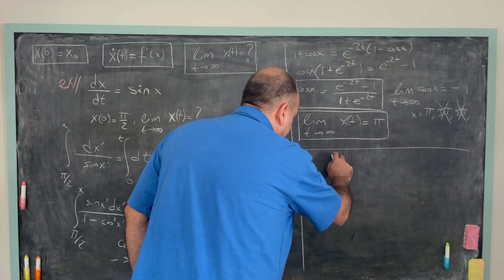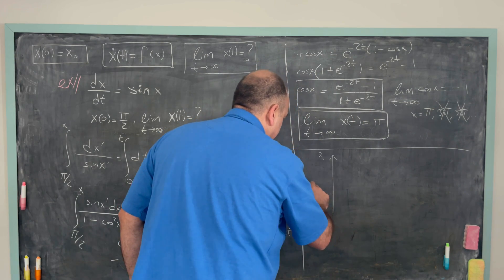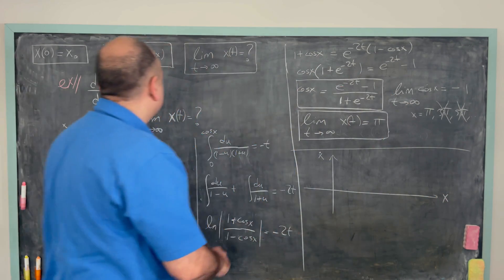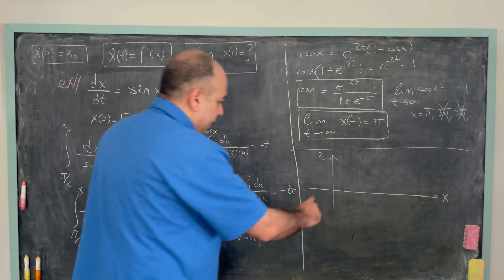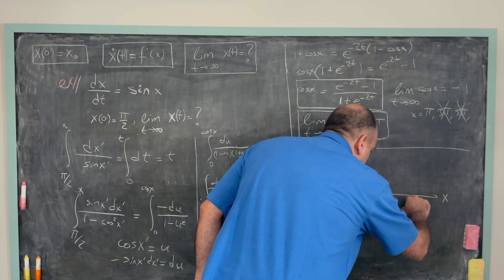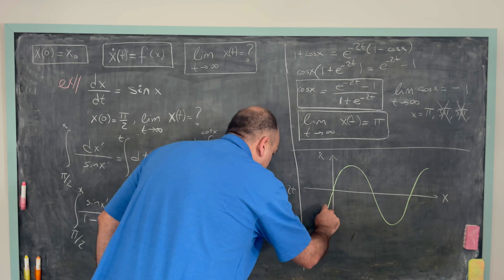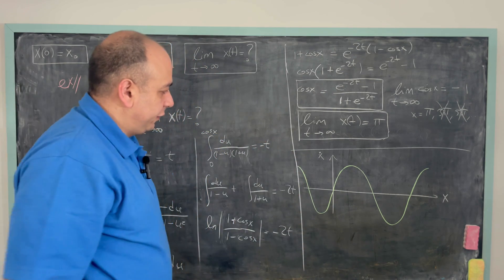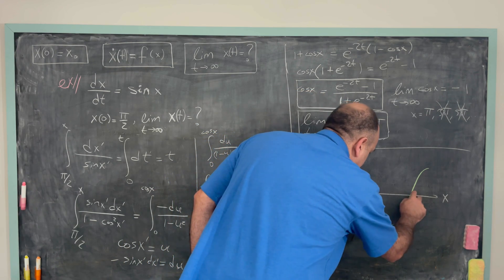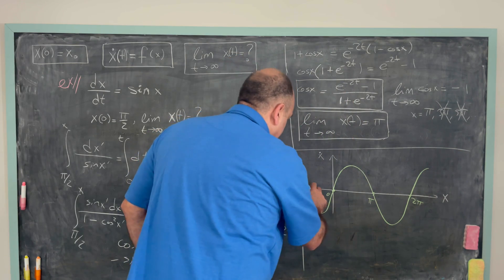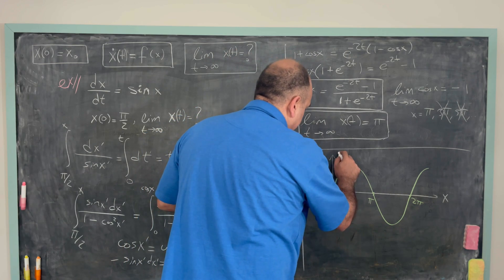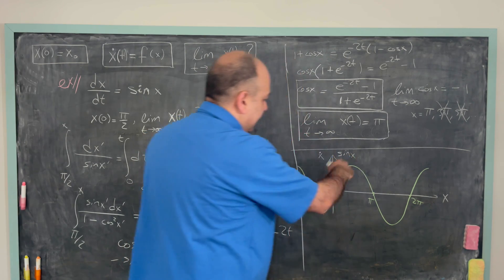The x-dot vs. x graph is simply a sine function: since x-dot = sin x, it's the plot of sin x versus x. The zeros occur at x = 0, π, 2π, -π, and so on.